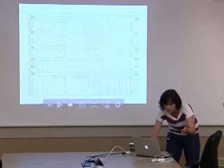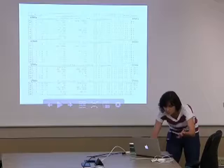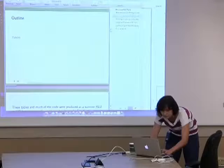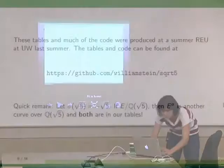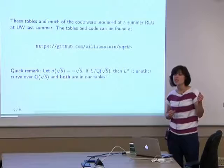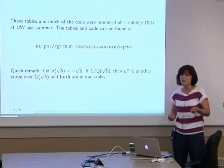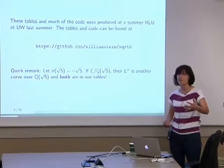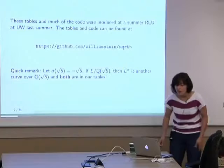Our tables go all the way up to conductor norm 1831. One quick remark: if we let σ send √5 to −√5, then our tables have E and they also have σ(E). This is a bit of a redundancy, but we found it was much easier to keep track of things and caused less confusion long term if we just had everything. So our final tables include both.